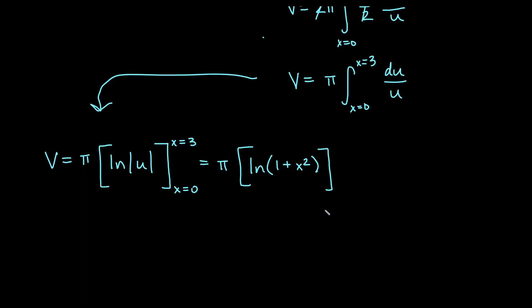We can write it in parentheses instead of keeping the absolute value brackets. Now that we're back in terms of x, I can think of this as plain old 0 to 3. We can plug in our bounds. So we'll have π times ln of 1 plus 3 squared. 3 squared is 9, so 1 plus 9 gives us 10, minus ln of 1 plus 0 squared, which is ln of 1. But ln of 1 is 0.